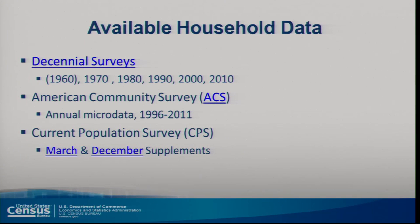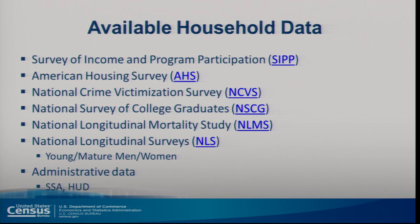Household datasets we have include the decennial census from 1960 through 2010, the ACS — essentially the new long-form version of the decennial — from 1996 through 2011, the Current Population Survey March and December supplements with new supplements being added including the tobacco use supplement, the Survey of Income and Program Participation, the American Housing Survey, the National Crime Victimization Survey, National Survey of College Graduates, the NLMS, the NLS, and Social Security administrative data as well as Housing and Urban Development data.